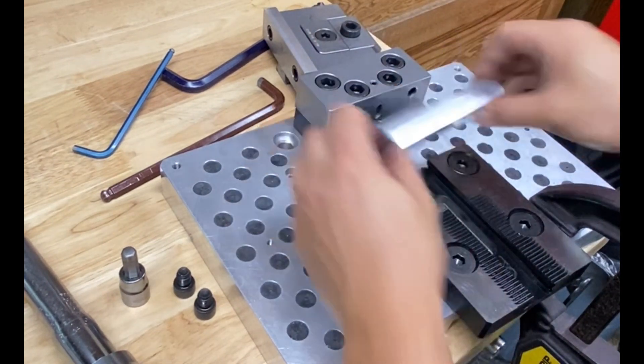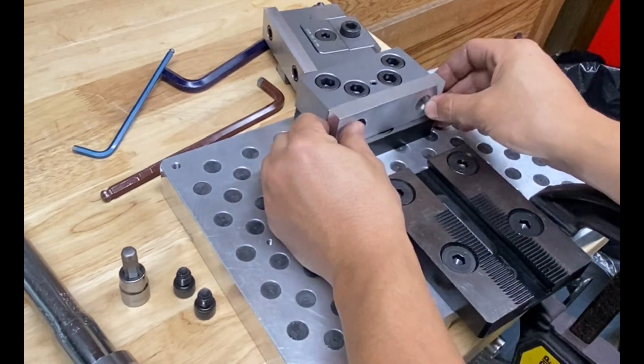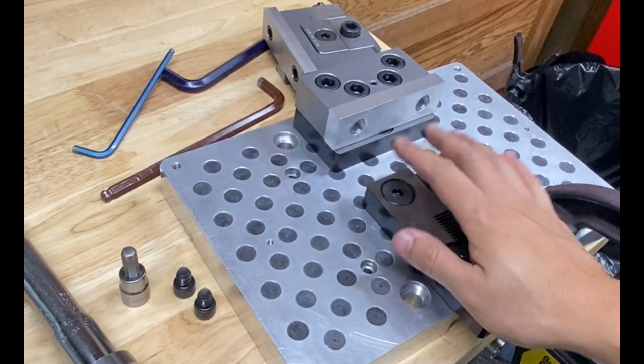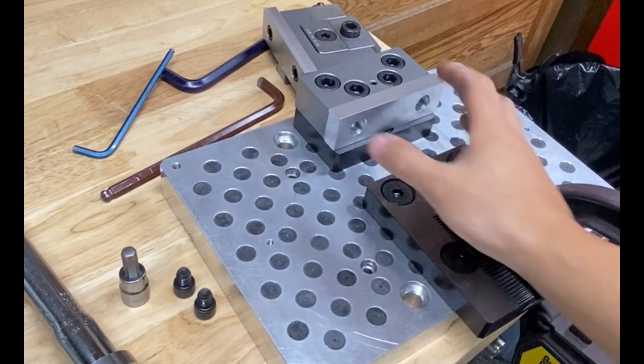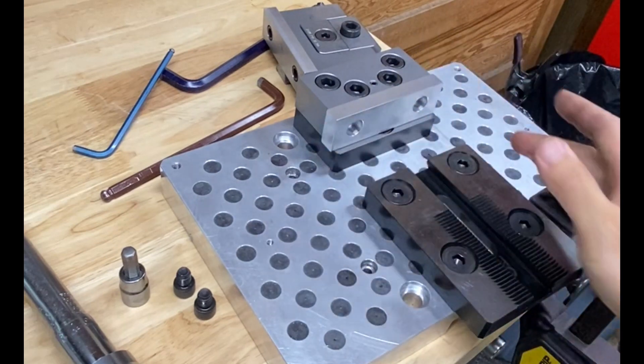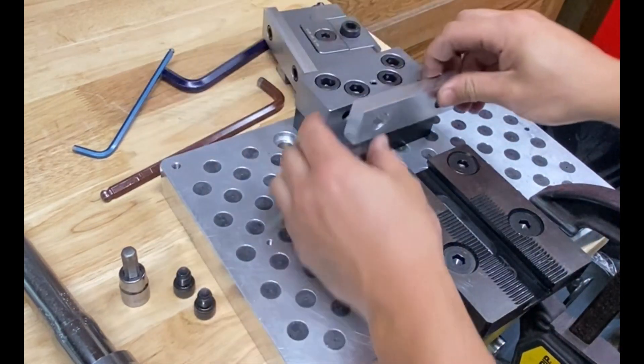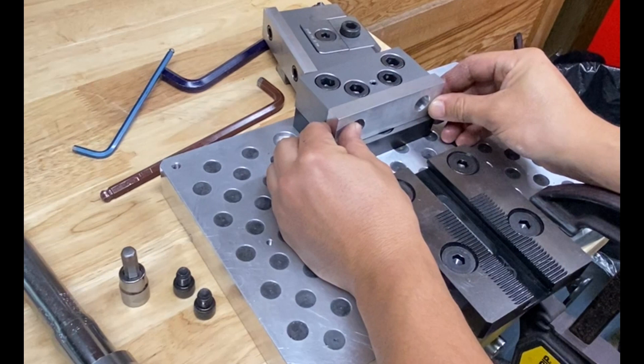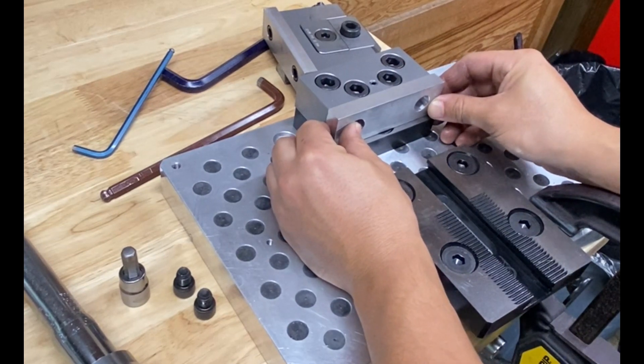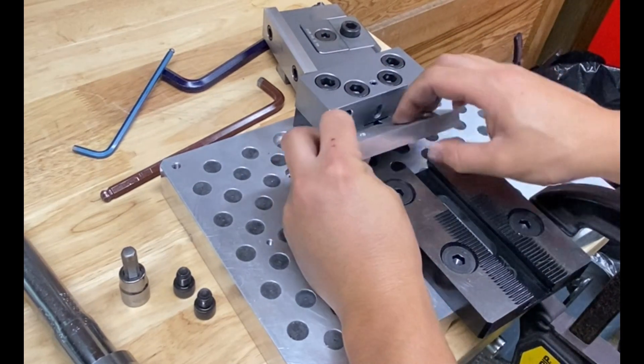That's pretty much all it's for. Put this in if you always indicate off the side and you just want to swap jaws in and out pretty quickly and you have a set G54 or whatever work offset you're using.